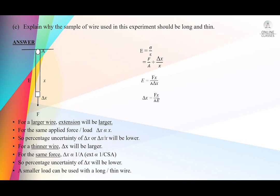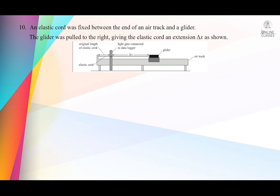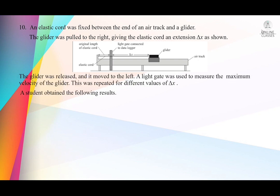Question number 10: an elastic cord was fixed between the ends of an air track and a glider. The glider was pulled to the right, giving the elastic cord an extension Δx. The glider was released and moved to the left. A light gate was used to measure the maximum velocity of the glider. This was repeated for different values of Δx. As Δx changes, speed also changes. The graph shows maximum velocity against extension — almost a straight line.